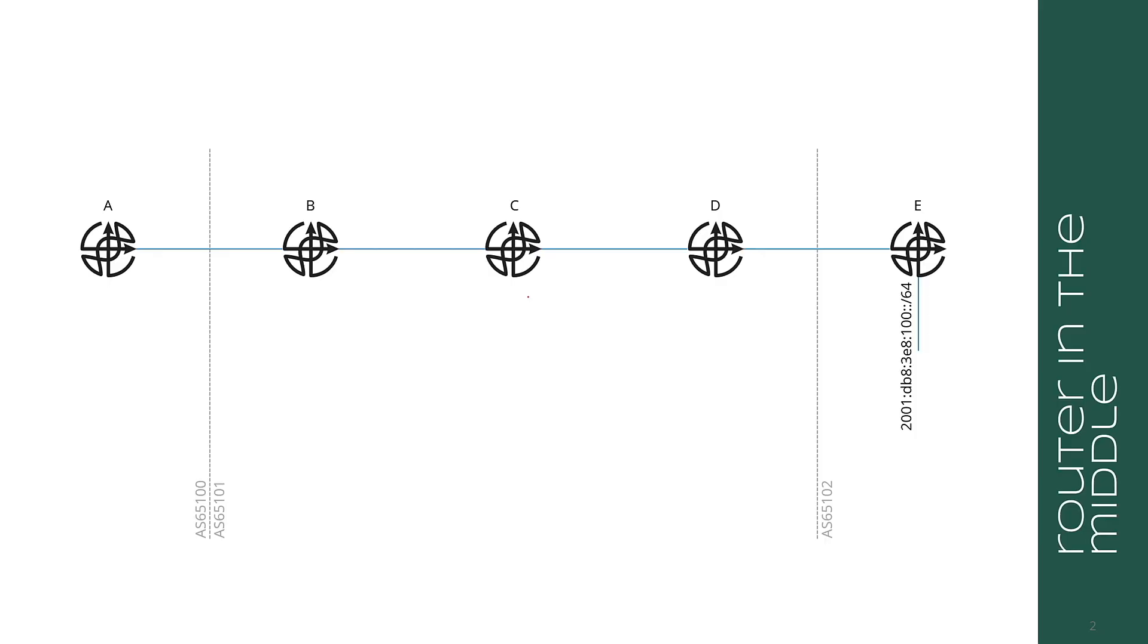But in networks with parallel paths, doing this full mesh can cause you to end up in routing loops during convergence events. So this is really bad. Another problem is this is really simple in a network with three routers or three BGP speakers.